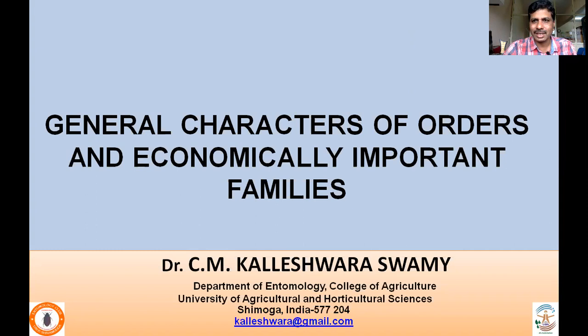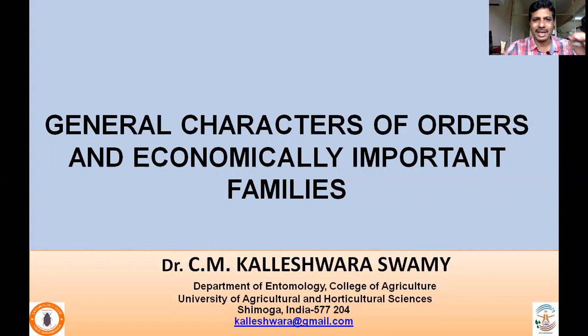As per the current classification, there are 31 orders. You'll be studying the distinguishing features of all these 31 orders, and wherever more number of species have been described and families have been identified in each of those orders, we'll be studying the distinguishing characters of economically important families. As a source of literature, I have taken information from Borror and DeLong's Introduction to the Study of Insects by Triplehorn and Johnson, and The Insects of Australia, a textbook for students and research workers. These two textbooks have been widely used for identification to the family level across the globe.